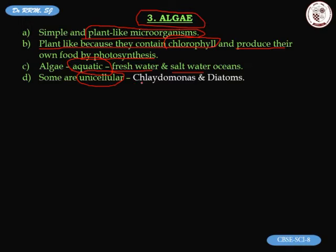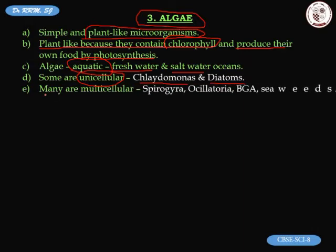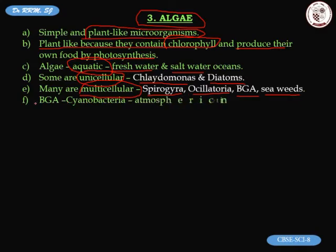Examples of unicellular algae include chlamydomonas and diatoms. However, many algae are multicellular — made of many cells. Examples include spirogyra, oscillatoria, BGA (blue-green algae), and seaweeds. Blue-green algae are also called cyanobacteria.